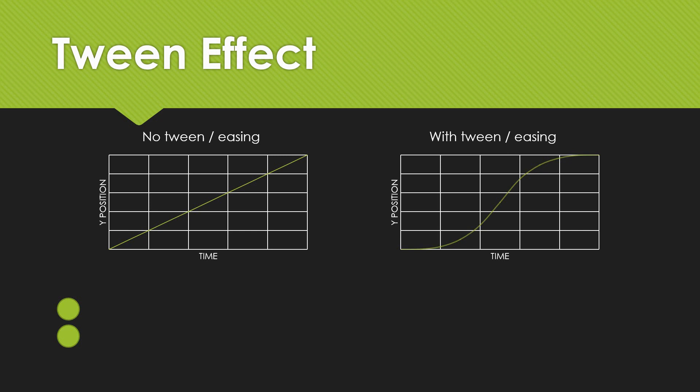If you take a look at the left graph, when I have my y-position changing within time without a tween, it will change linearly. When I use a tween or an easing, it means that it will gradually start accelerating and decelerating depending on the tween you're using, and this makes things more fluid.